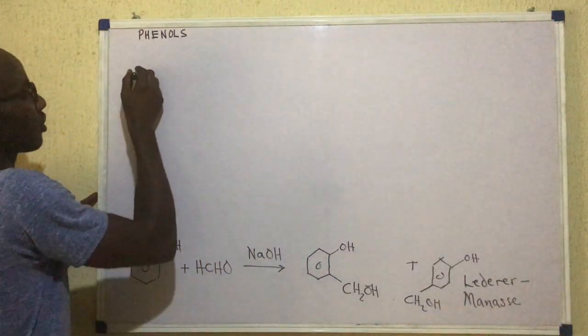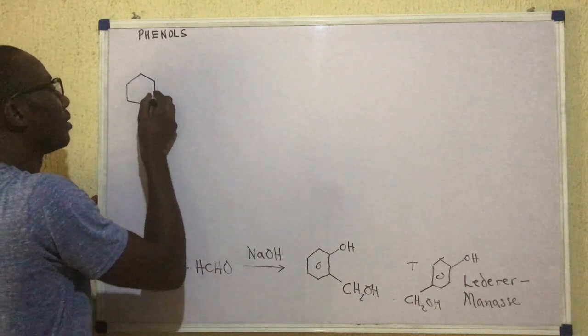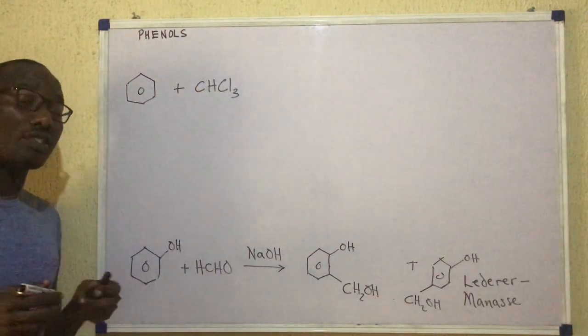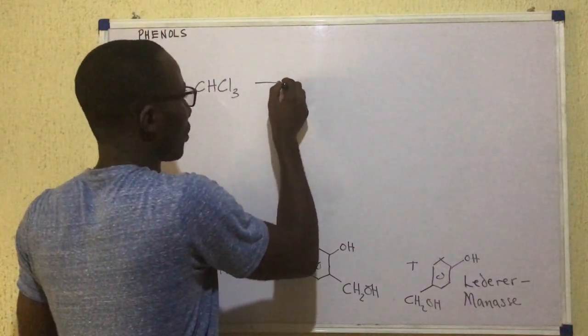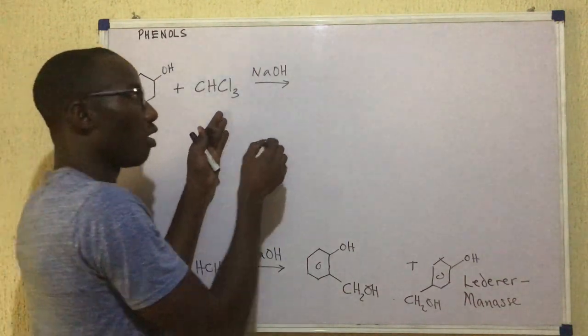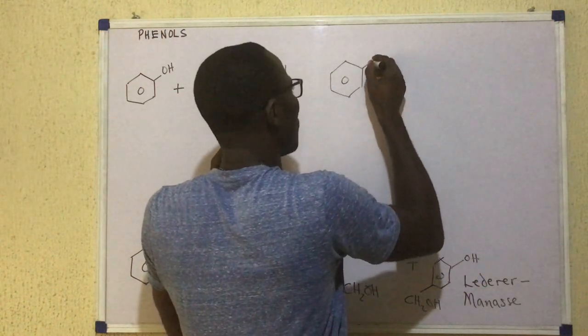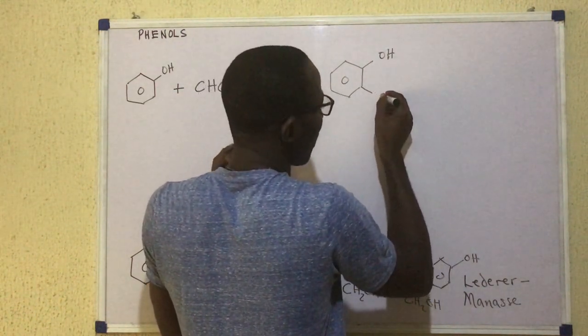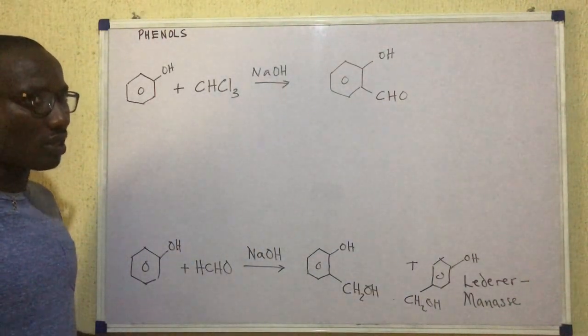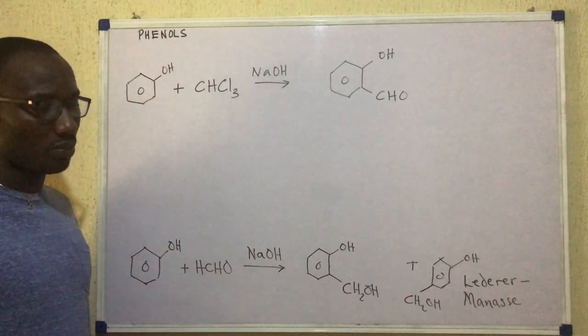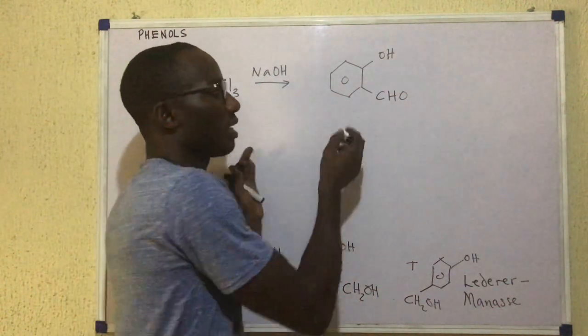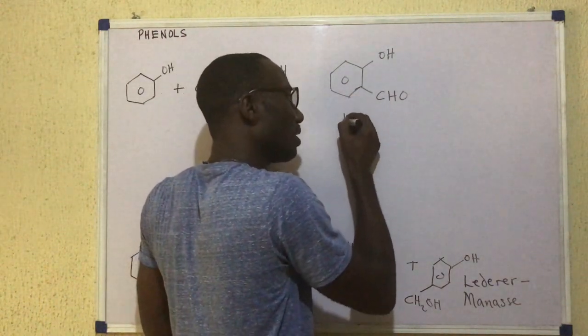Then, there's an important reaction we have here. This is phenol plus CHCl3. CHCl3 is chloroform. And this reaction, too, requires the presence of sodium hydroxide. So when phenol reacts with chloroform, we get a product that looks like this. So OH there. And then down here we have CHO. So that is the hydroxy derivative of benzaldehyde, 2-hydroxybenzaldehyde. This compound is formed from this reaction.